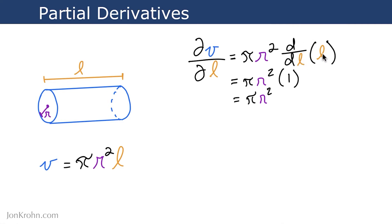According to the power rule, l is actually l to the power of 1, and so l to the power of 1 becomes 1 times l to the power of 0. Anything to the power of 0 is simply 1, and 1 times 1 leaves us with 1. The only thing that's new is that we're treating a variable, r squared, as a constant because we're not differentiating r squared here. So we leave that as a constant, and we have pi r squared times 1, which simplifies to pi r squared.